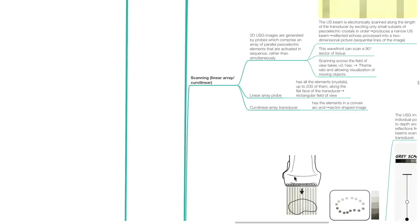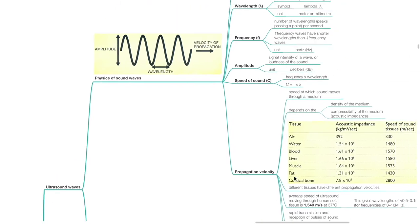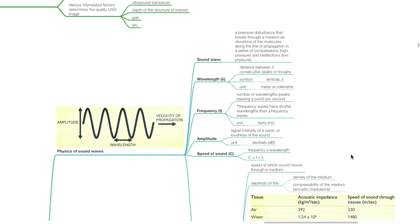Physics Principles of Ultrasound Imaging. A sound wave is a pressure disturbance that travels through a medium as vibrations of the molecules along the line of propagation in a series of compressions and rarefactions. Wavelength is the distance between two consecutive peaks or troughs; the symbol is lambda, and the unit is meter or millimeter. Frequency is the number of wavelengths per second. High frequency waves have shorter wavelengths than lower frequency waves; the unit is hertz. Amplitude is the signal intensity of a wave or loudness of the sound; unit is decibel. Speed of sound equals frequency times wavelength.